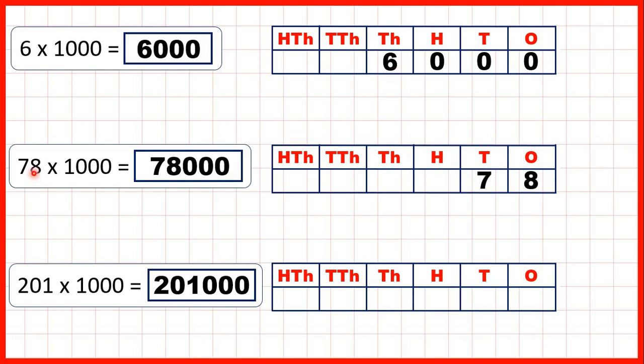Then we had 78 times a thousand and if we move the digits three place values to the left, write zeros in our empty hundreds, tens, and ones columns, that gives us our answer 78,000.